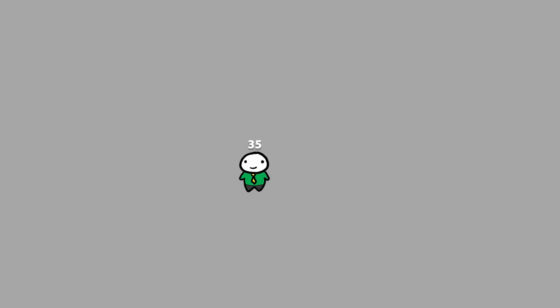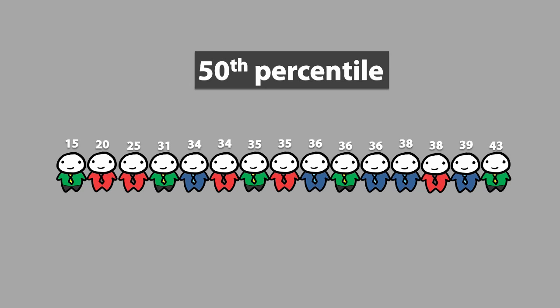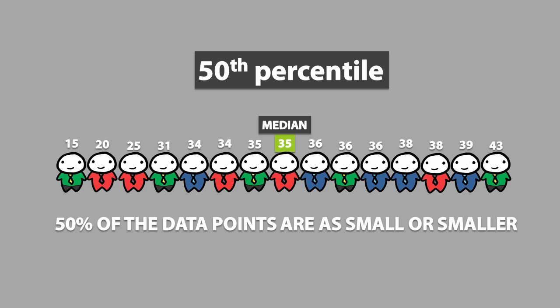To look at percentiles, we have to numerically order the data. If I asked you what the 50th percentile is, all you would have to do is find the median. The 50th percentile means that 50% of the data points are as small or smaller.